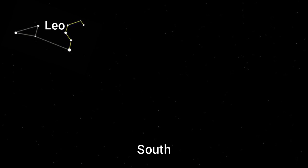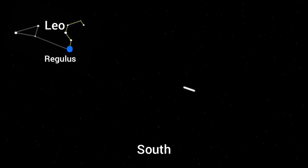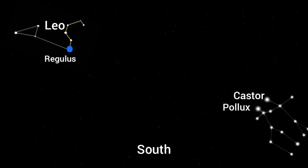You'll want to look for Leo first. Leo is a really big constellation and it has that very distinctive backwards question mark representing the head of the lion. The bottom star of that backwards question mark is Regulus — a really bright star, the dominant star in Leo. If you imagine drawing an imaginary line straight across the sky, you'll come to two really bright stars: the famous Castor and Pollux.